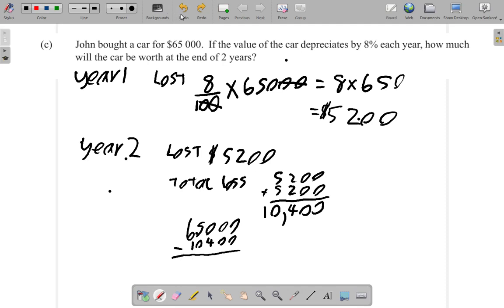So it suffers a total loss of 10,400, leaving 54,600. You could work it out by hand or use a calculator for this. So how much is it worth at the end of two years? It is worth $54,600.